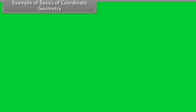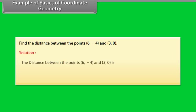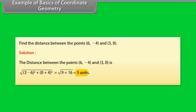Example — Basics of Coordinate Geometry: Find the distance between the points (6, −4) and (3, 0). Solution: The distance between the points (6, −4) and (3, 0) is 5 units.